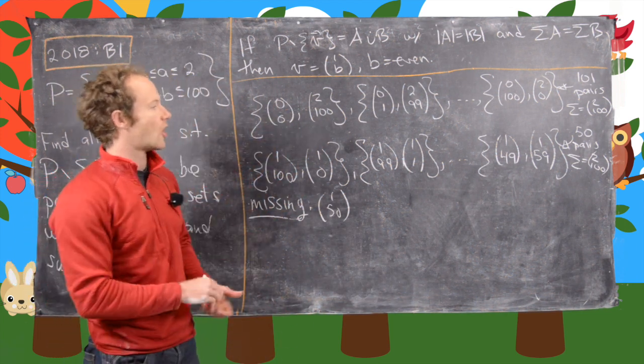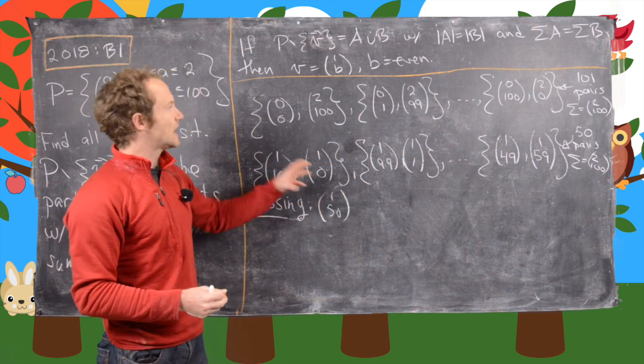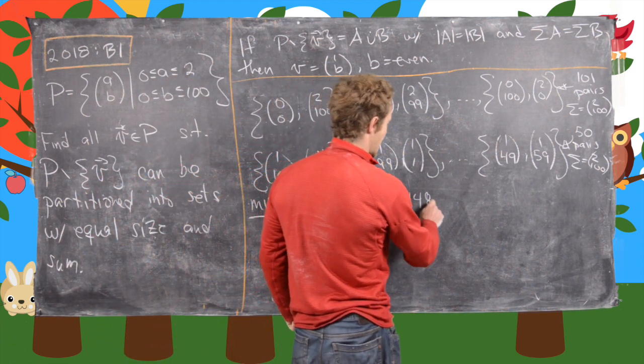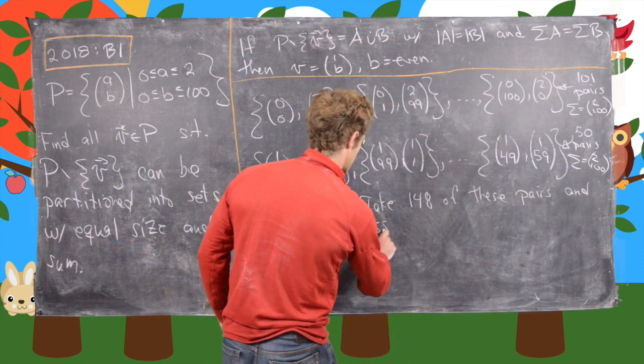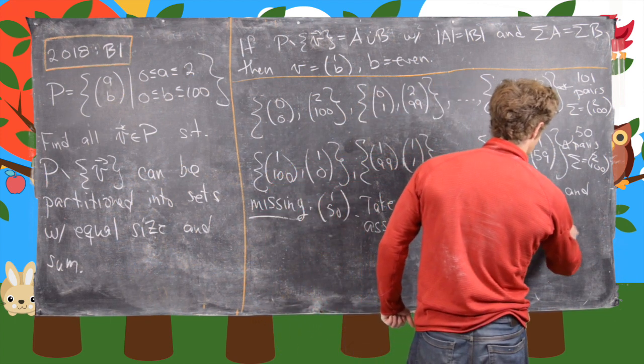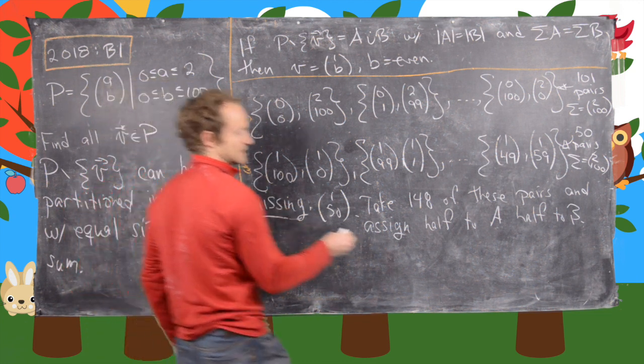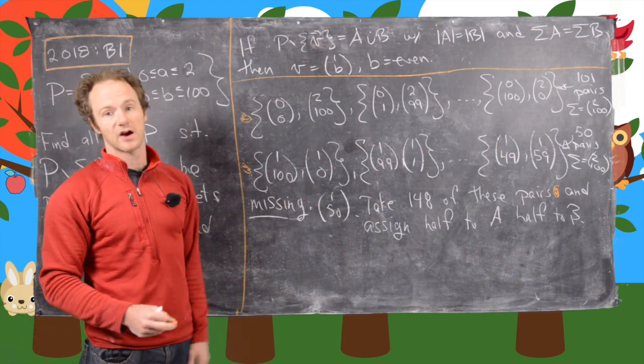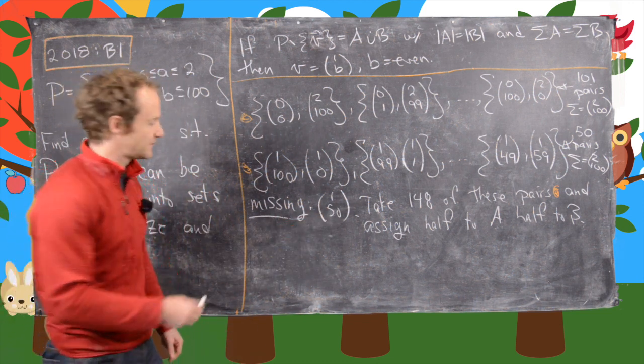Now what we'll do is take all but three vectors from these lists and assign them equally to A and B. In other words, take 148 of these pairs and assign half to A and half to B. That's going to leave us three pairs left over and this vector (1,50). And this is where we have to split into cases.